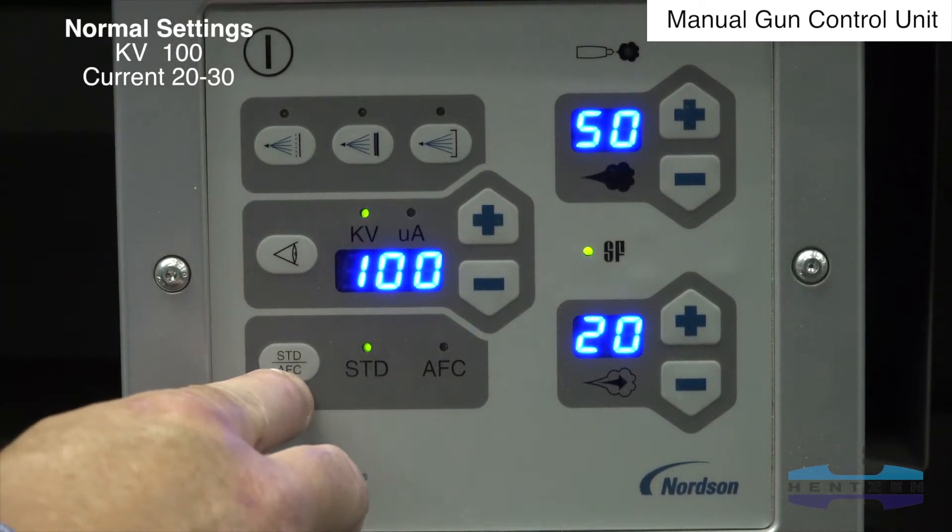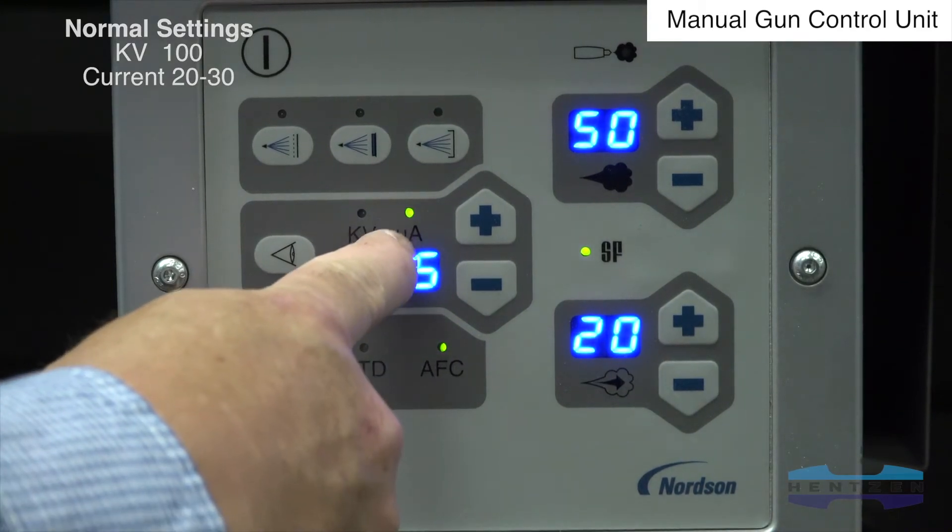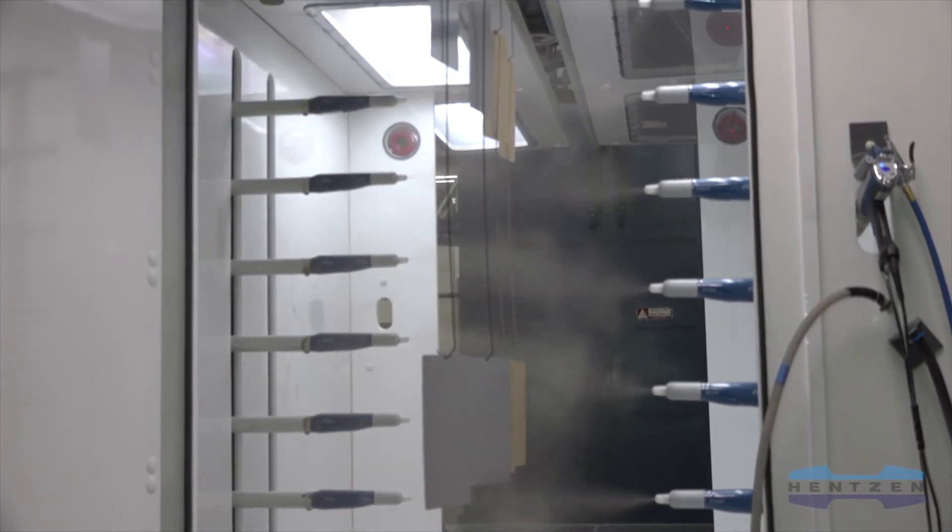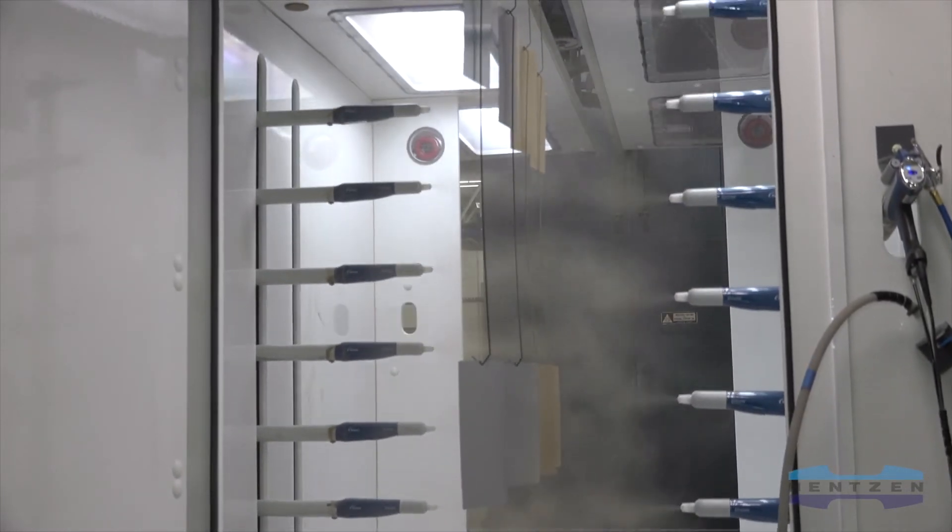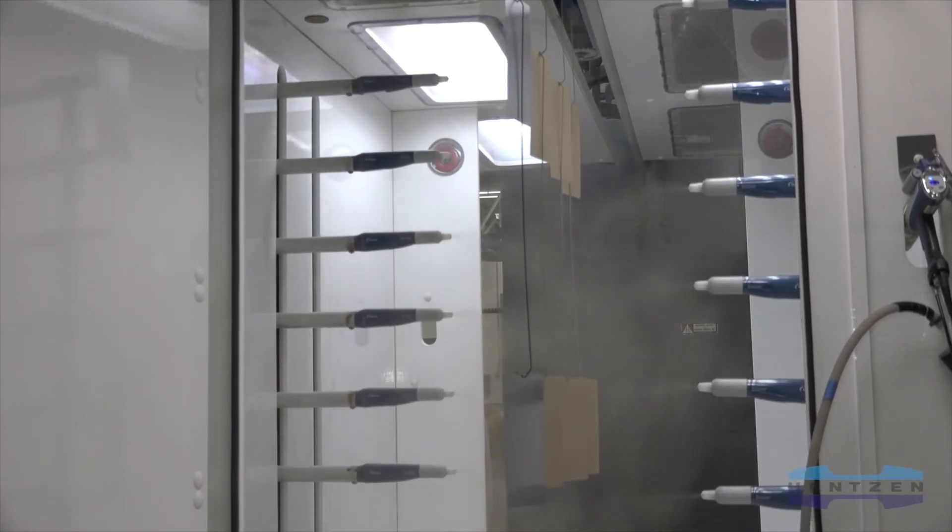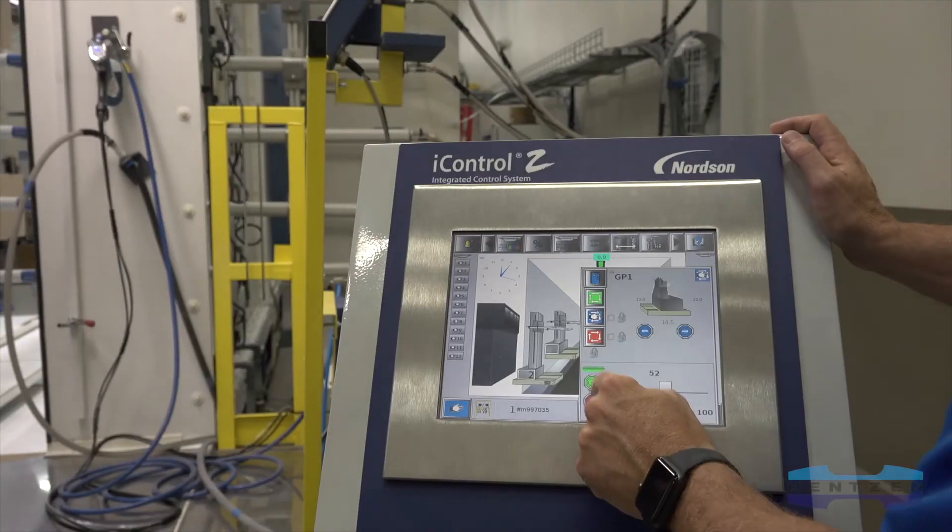The 100 KV setting is also a limiting setting built into the power supply. You will likely not have 100 KV while spraying a part. When spraying a part, the potential voltage is being realized due to the load on the power supply and will be lower than the actual setting.